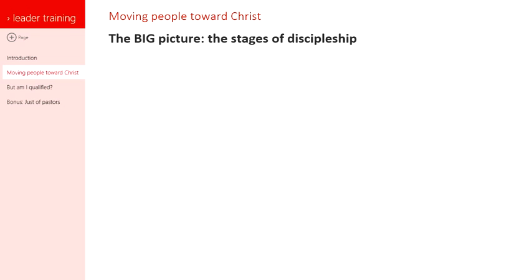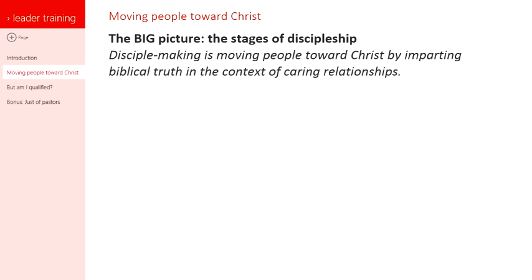We're going to talk about what we're calling the stages of discipleship. Let's remind ourselves of our definition: disciple making is moving people toward Christ by imparting biblical truth in the context of caring relationships. So if the whole goal is to move people, we need to know what stages they're moving through. This will help us get a common language so we know exactly what we're trying to do and can determine if we're winning — if we're succeeding in leading people.